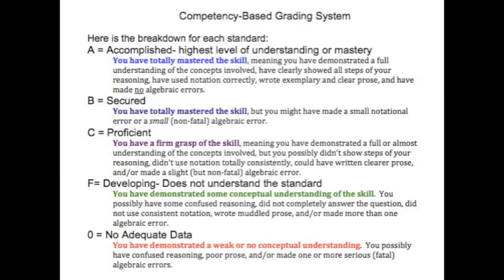Our entire Van Meter district uses the same scale: A, B, C, F, and 0. The math department wrote a description of what each value on the scale means. Basically, a C is average or proficient — the student has a basic conceptual knowledge of the standard. A B is if the student makes computational or other small errors, so they are secure. An A represents work with no errors, so they are accomplished.